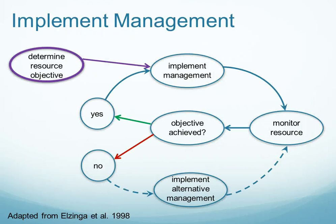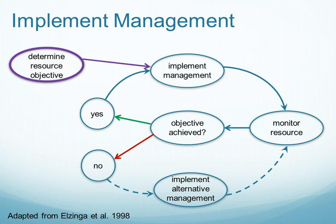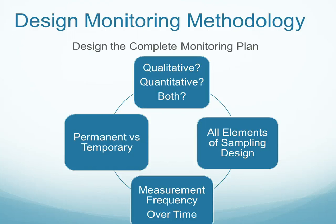Now if we think of how we are going to implement management, here we are looking at an example of an adaptive management cycle. Once we have determined what the resource objective is, the very important step is to implement whatever management changes we are going to use. Sometimes we do not change management, but still, no change in management is still a decision about management. Once we have done that, we design our monitoring methodology.